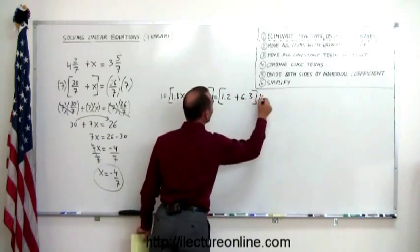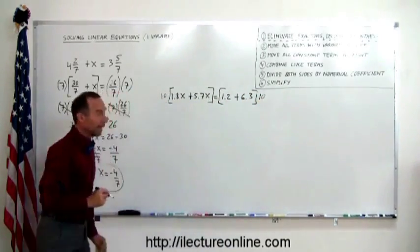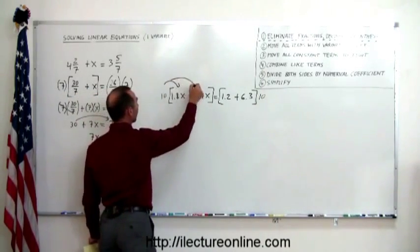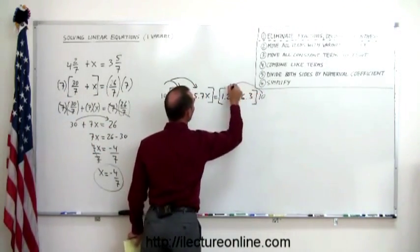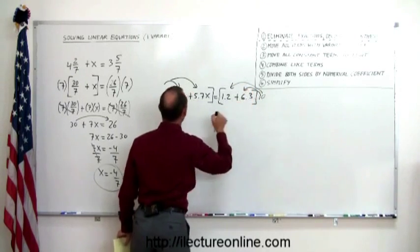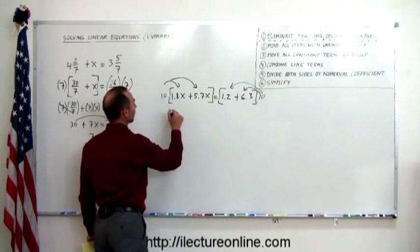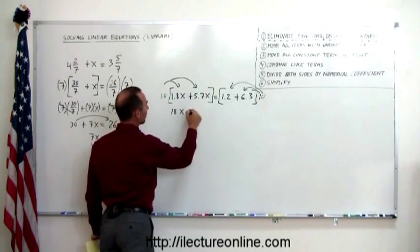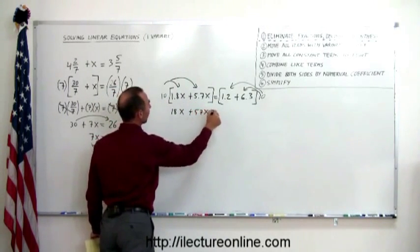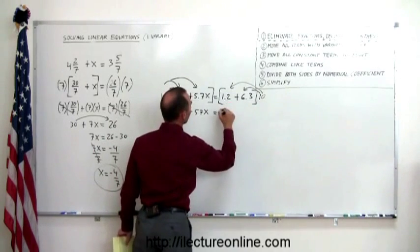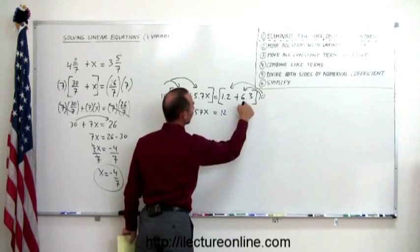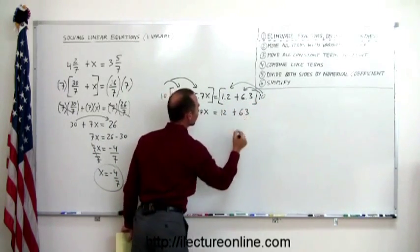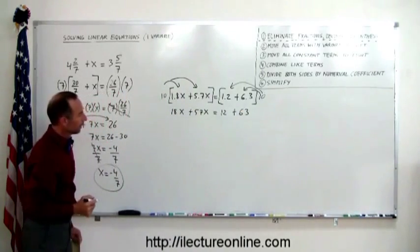That will get rid of these decimal places. Again, we have to distribute this over every one of these. We have to distribute this over every one of these. And 10 times 1.8x gives me 18x. 10 times 5.7x gives me 57x. 10 times 1.2 gives me 12. And 10 times 6.3 gives me 63.